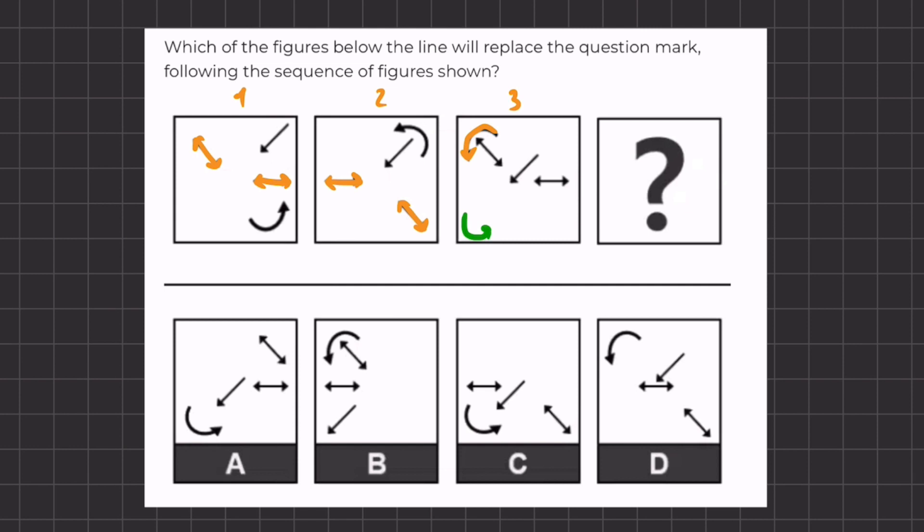And if we take, let's say, this arrow over here, it should be moving diagonally to the right-hand corner of the triangle, meaning that it should be somewhere over here.